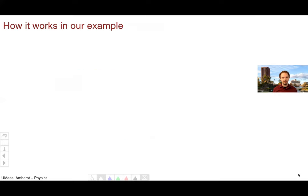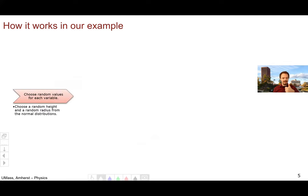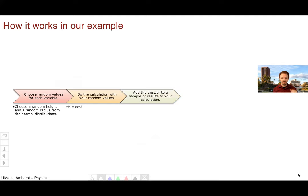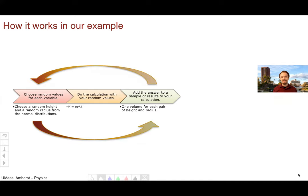How does it work in our example? We're going to choose a random height and a random radius from our normal distributions, then calculate volume — pi r squared h — and build up a sample of volumes. For each pair of height and radius we get a volume, and we repeat this a bunch of times. We then measure the mean and standard deviation of this sample of volumes, and that gives us our result.